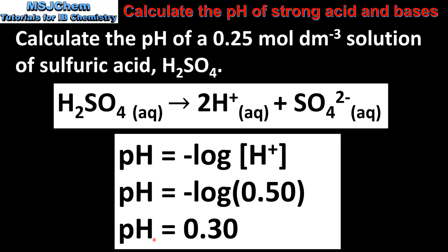When we take the negative log of 0.50 we get a pH value of 0.30.